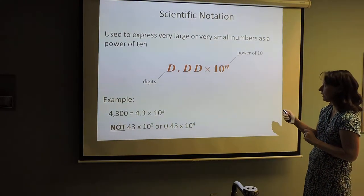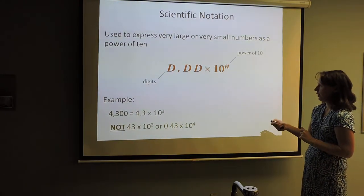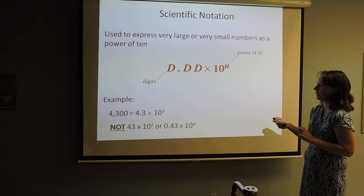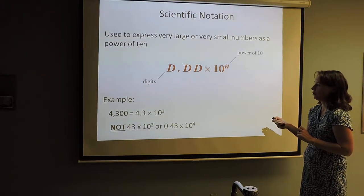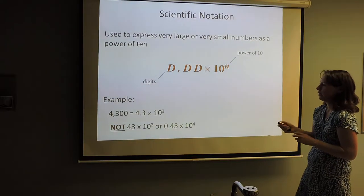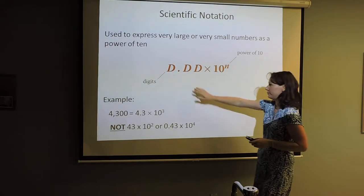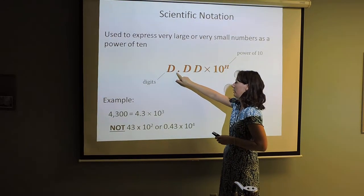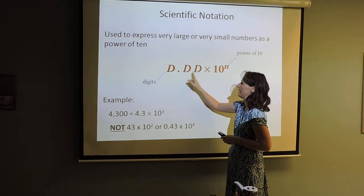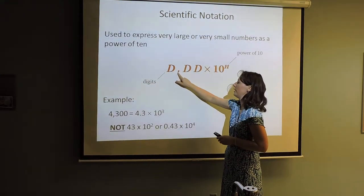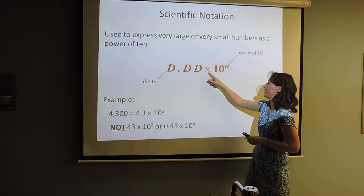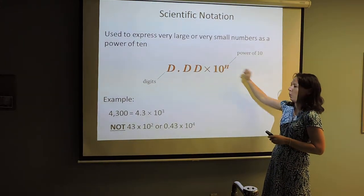So we use this format: we put the decimal in between the first two digits. The decimal needs to go digit, decimal, and then the rest of your numbers — and then you say times 10 to the whatever.